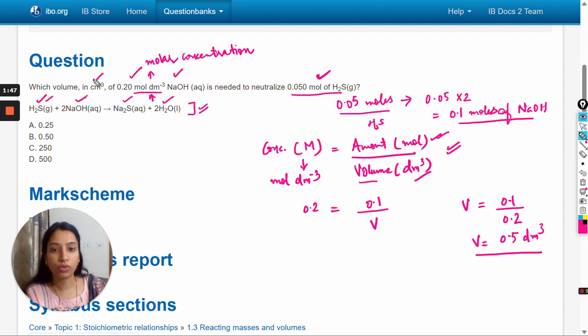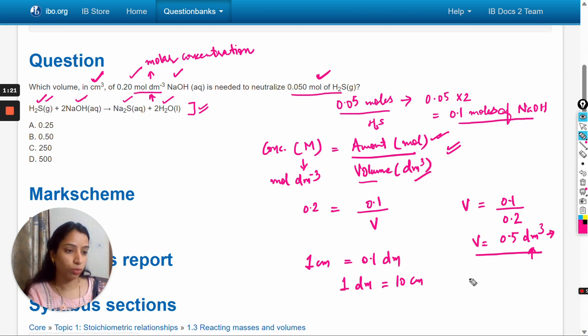Here the volume is in decimeter cube, but in the question we have to calculate the volume in centimeter cube, so we have to convert. We know that 1 centimeter equals 0.1 decimeter, or 1 decimeter equals 10 centimeter. So 1 decimeter cube equals 10 to the power 3 centimeter cube.